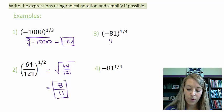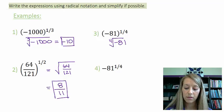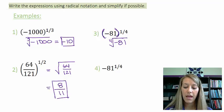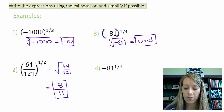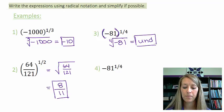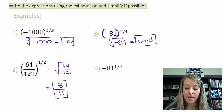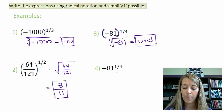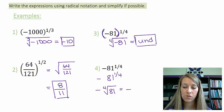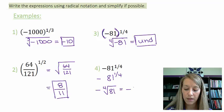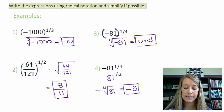Number three is the fourth root of negative 81, and the negative goes under the radical because of the parentheses. This is not simplifiable because you cannot take an even root of a negative number — so this is undefined. Number four might look the same, but the negative is NOT taken to the one-fourth power. Rewriting it shows the negative is separate: it's just negative times the fourth root of 81. The fourth root of 81 is 3, so the answer is negative 3.